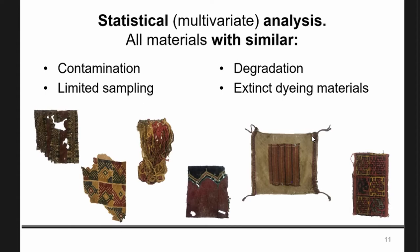In case someone here doesn't know what multivariate analysis means — I'll use the audience as an example. If I'm doing statistics and I choose multivariate classification, I can choose very specific variables. Let's say we add the variable of chosen profession. That may not reveal many trends. But if we add archaeologists specifically, or textile conservators, or chemists, that gives me very specific variables that I can use to fine-tune the statistical analysis. And that's pretty much what we did.